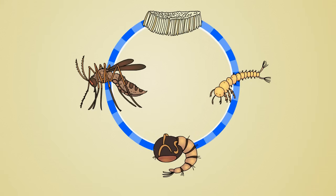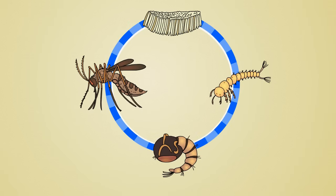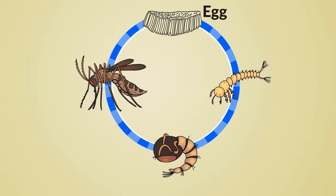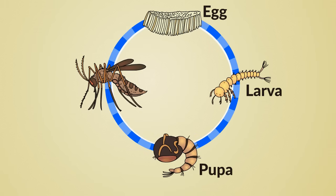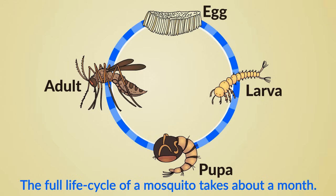Mosquitoes go through four different stages of growth during a lifespan. These four stages are: the egg, larva, pupa, and adult. The full life cycle of a mosquito takes about a month.